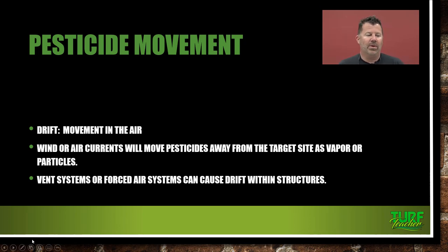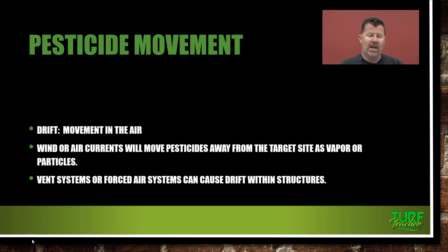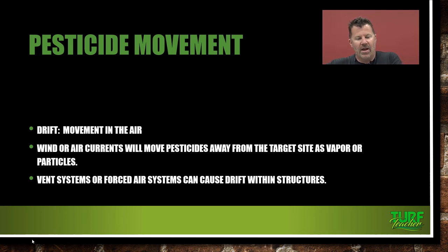Pesticide movement can be caused by drift — movement in the air. Wind or air currents move the pesticides away from the target site as a vapor or particles. We just talked about vapor drift and particle drift. Vent systems or forced air systems can also cause drift within structures. If you make a pesticide application and then have to turn on ventilation because it gets too hot, the pesticide residues — whether wet or a dusting — are still on your crop. When the ventilation system sucks it out, that could go outside or move to another side of the greenhouse and kill another crop. You have to be careful when applying inside a greenhouse or any structure where you're growing crops.